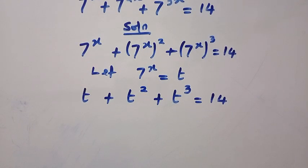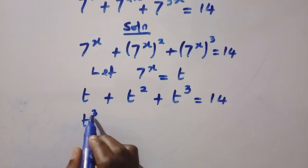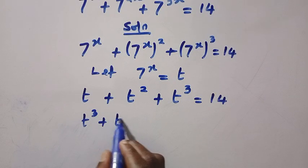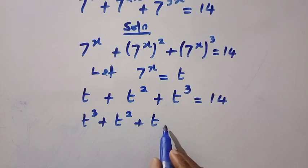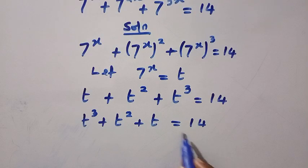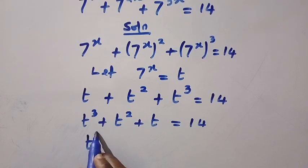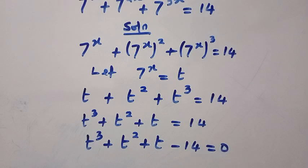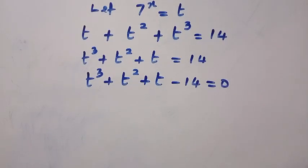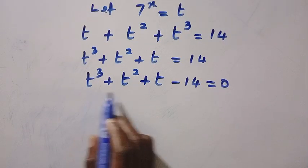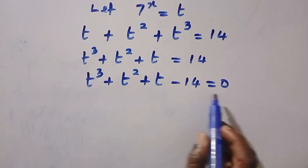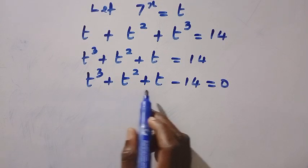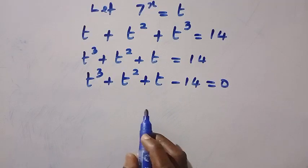If I rearrange this, we are going to have t^3 + t^2 + t = 14. And if I take 14 to this left-hand side, we are going to have t^3 + t^2 + t - 14 = 0. In the next step, we are going to make all this left-hand side equal 0 because we need the value of t that satisfies this equation.